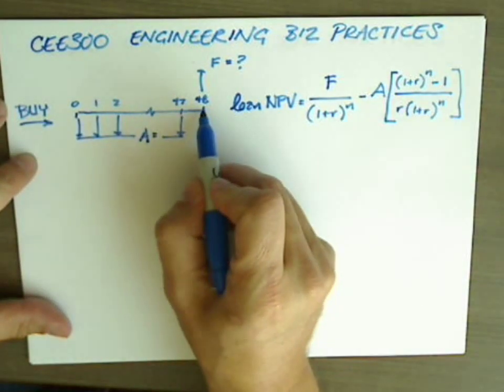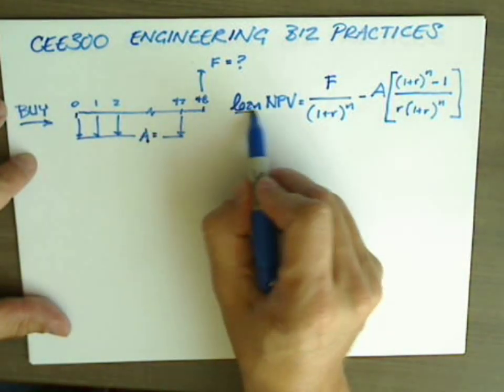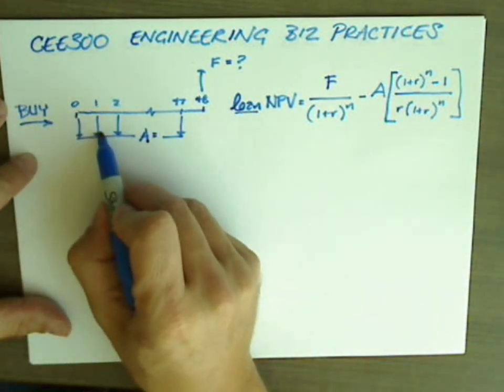Namely, here's the cash flow diagram that we use if we're going to buy the new car and we're going to take out a loan.